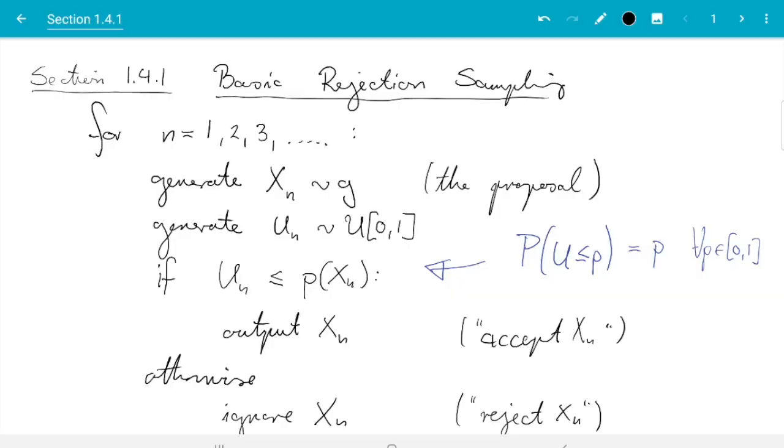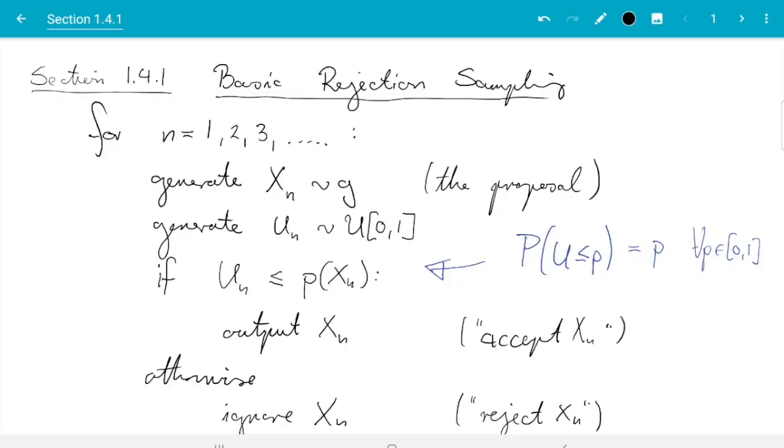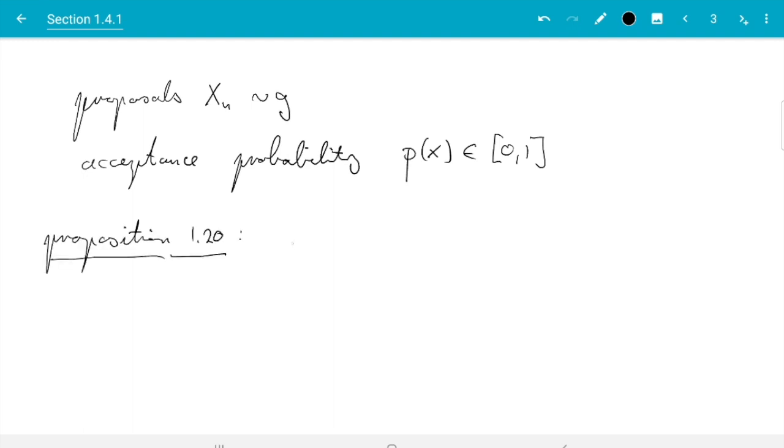So that was our experiment. Now we are ready to tackle the formal results which covers this algorithm. So let me write that. We have proposals xn and we assume they come from a density g. Then we have an acceptance probability which I want to call p. So that depends on the location. And at location x that's the probability. So a number between 0 and 1.